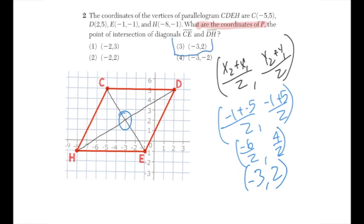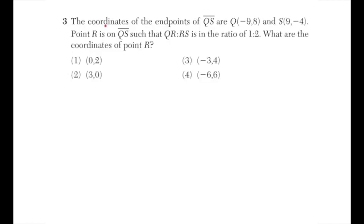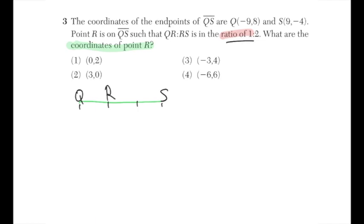Question number three: the endpoints of QS are (−9, 8) and (9, −4). Point R is on QS such that QR to RS is in the ratio one to two — that's very important. We need the coordinates of point R. Sketching the segment, R splits it into three congruent parts and is located one-third of the way from Q to S.